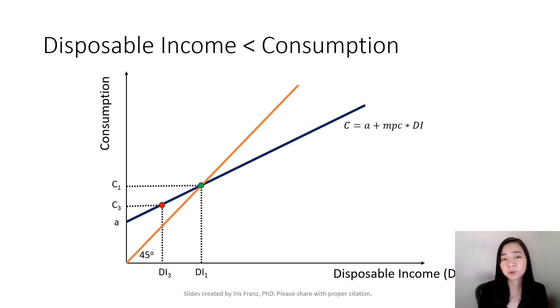Now let's take a look at another point, the red point on the consumption schedule. Here, you can see quite clearly that our disposable income is lower than our consumption. Therefore, you can come to a conclusion that as long as we're on the consumption schedule at the left-hand side of the 45-degree line, then we know that disposable income is lower than your consumption, meaning you're dissaving.